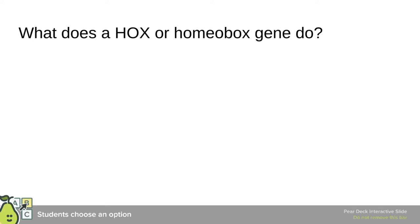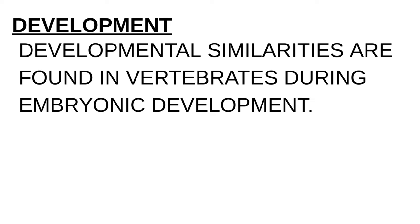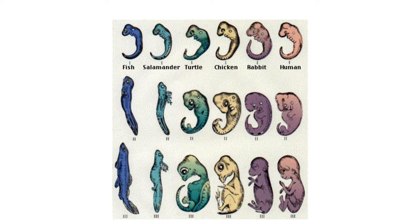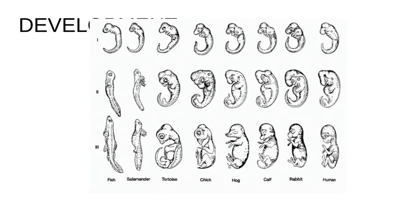Developmental similarities, which are caused by hox genes, are found in vertebrates during embryonic development. You can see a fish, a human, and a rabbit all look pretty much the same early on. Then as different genes are turned on, they diverge in their similarities.